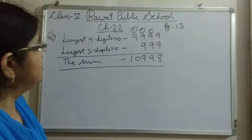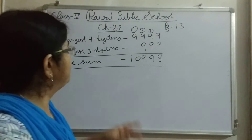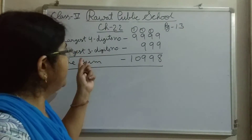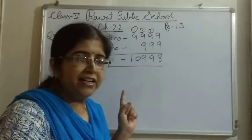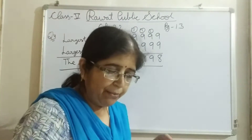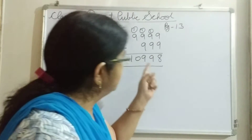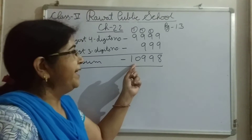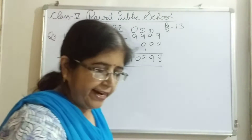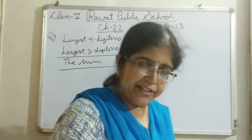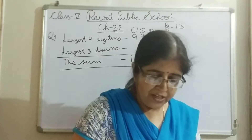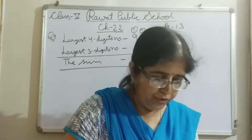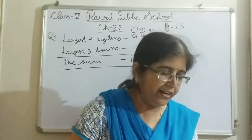It means the sum of the largest 4-digit number and the largest 3-digit number is 10,998. So इसी पर question 5 है.